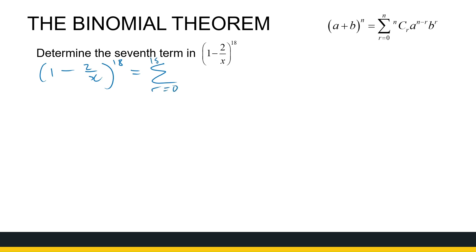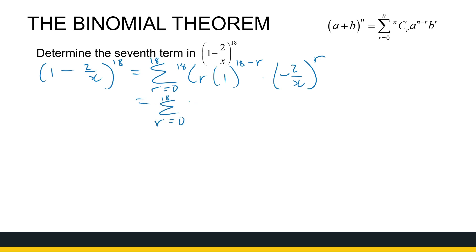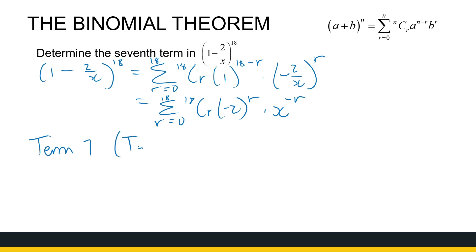It's the sum when r goes from 0 to 18 of 18Cr, (1) to the power (18 − r) — that one's quite nice — times (−2/x) to the power r. So that is r going from 0 to 18 of 18Cr. Let's get the coefficient together: 1 to any power is just 1, so I'm not even going to look at that. But I've got (−2) to the power r. For x's, I've got x to the power −r, because it's −2 divided by x. So term 7 has r = 6, giving T7 = 18C6 · (−2)^6 · x^(−6). So I'm going to get a positive number, x to the power −6.